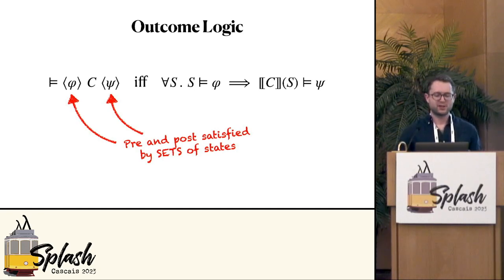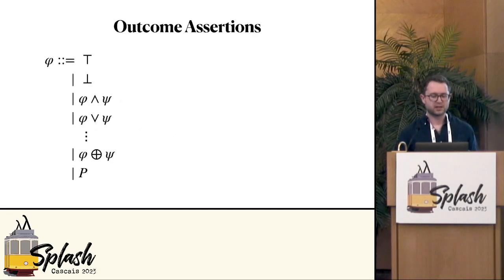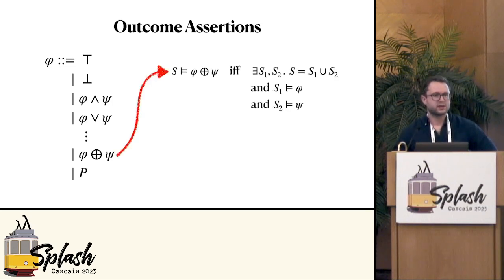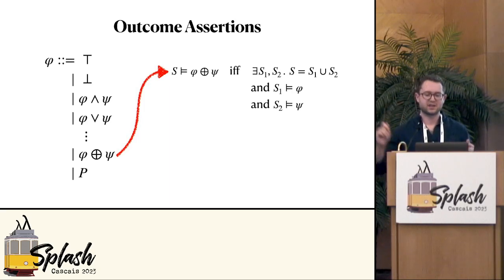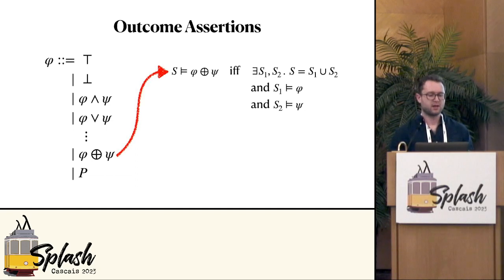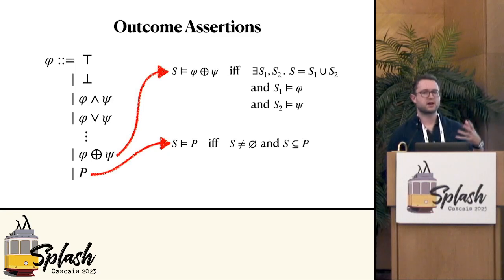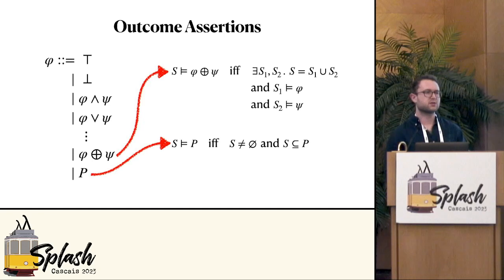To talk about branching we need a language, so we have outcome assertions. Outcome assertions have standard constructs like true, false, conjunctions, and disjunctions, but also a few new constructs. The first new construct is what we call the outcome conjunction, the O-plus operator. This tells us: if we have some set of states satisfying phi and some set satisfying psi, then their union satisfies the outcome conjunction of those two assertions — so you can split the set of outcomes into two parts and describe them individually. We also use primitive assertions P where every state in the set of outcomes must satisfy P, and we require that the set of outcomes is non-empty, so this outcome is non-vacuously reached.